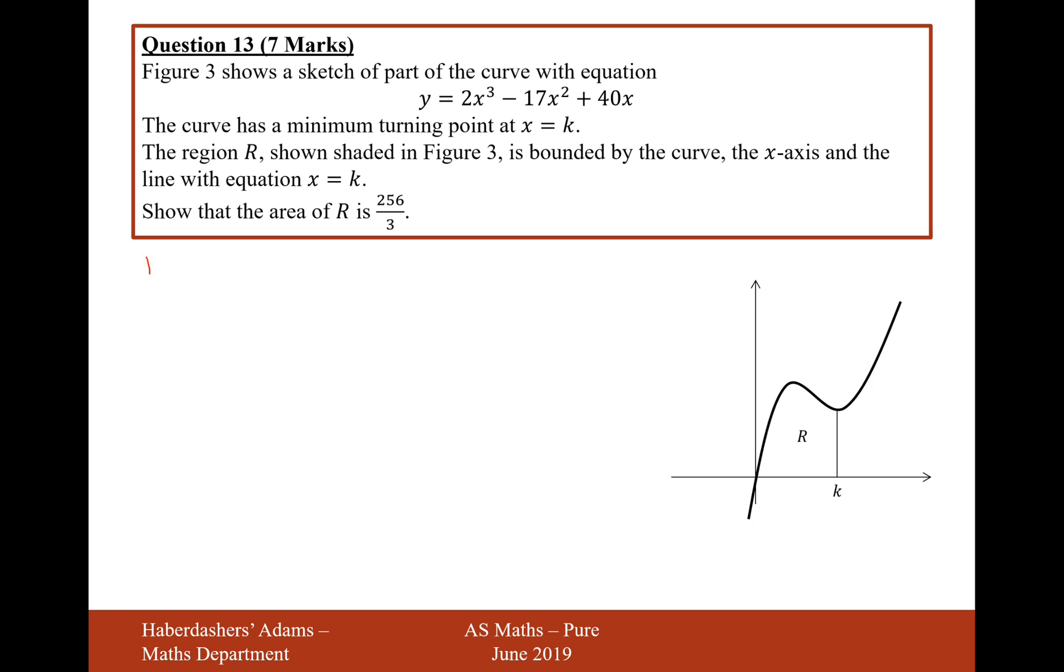Okay, so now that we know that k is equal to 4, let's now find the area by integrating. So, it's going to be the integral from 4 to 0 of 2x cubed minus 17x squared plus 40x dx.